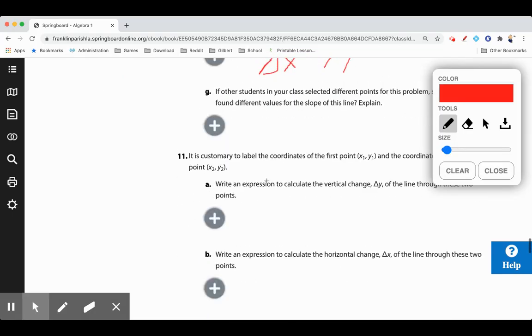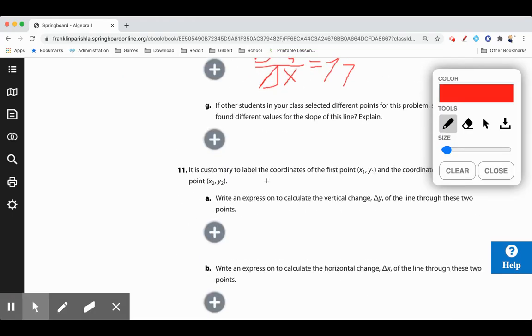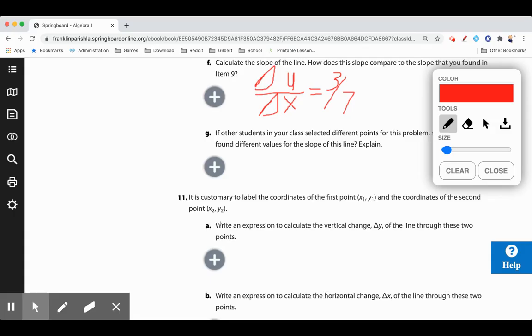It's customary, traditional, to label the coordinates of the first point x1 and y1, and the coordinates of the second point x2, y2. It's just the way that we label them, the way that you can see them in your book and any other places that you may come across. You'll know my first point, which one is my second point, which of my first y's, which of my second y's, x's, and so on.